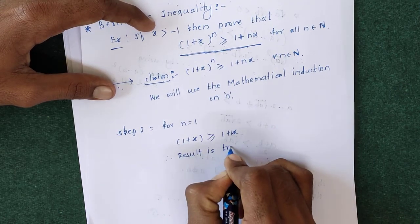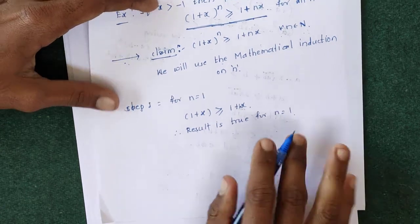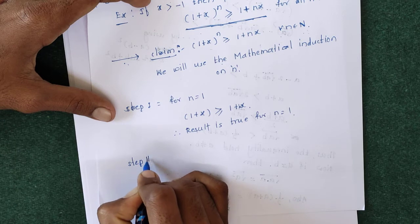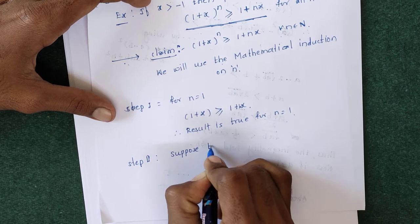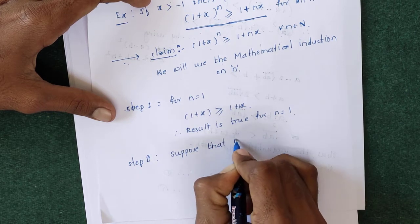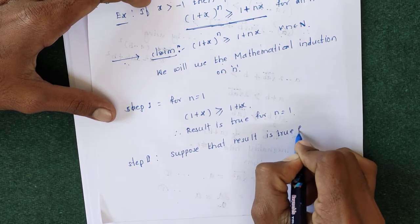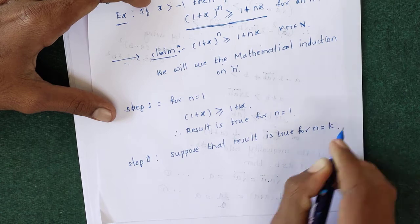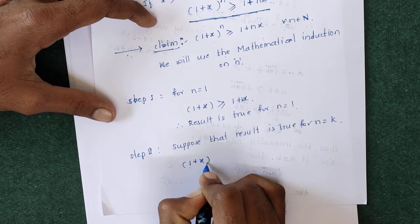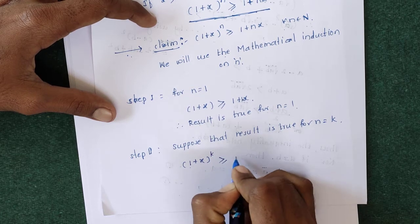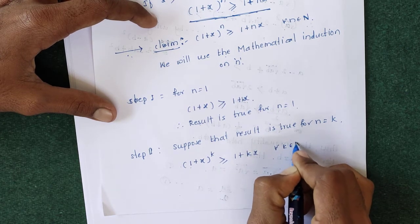In the second step, we assume the result is true for n = k; that is, (1 + x)^k ≥ 1 + kx for some k ∈ ℕ. This is our inductive hypothesis.